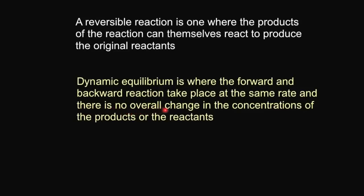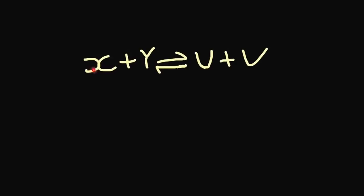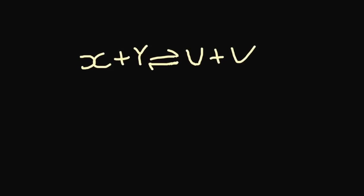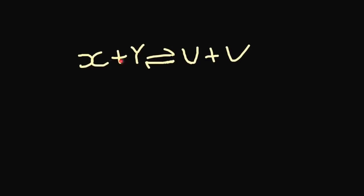There is no overall change in the concentrations of the products or the reactants. In this example, I've got X plus Y going to U plus V, and equally U and V going to Y plus X. So let's imagine a situation where originally you start off with 100 of X, 100 of Y, 0 of U, and 0 of V. After 5 minutes it reaches dynamic equilibrium.